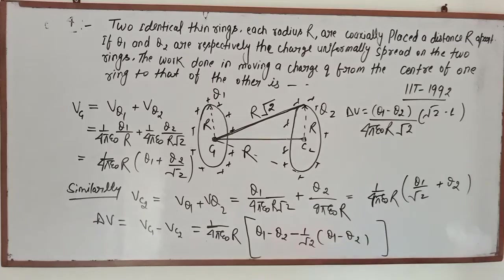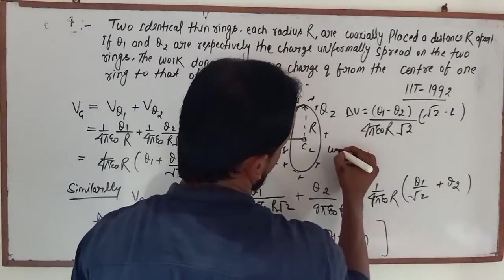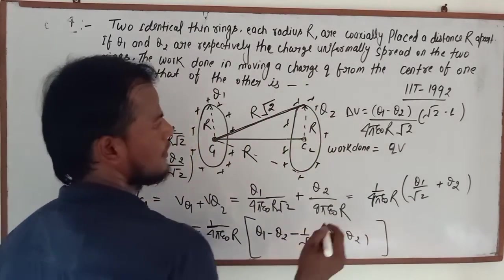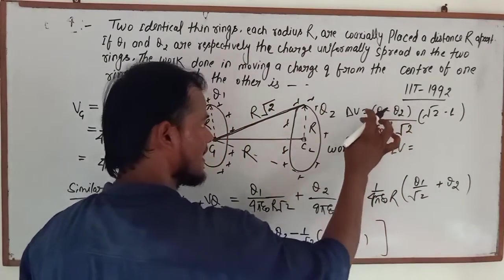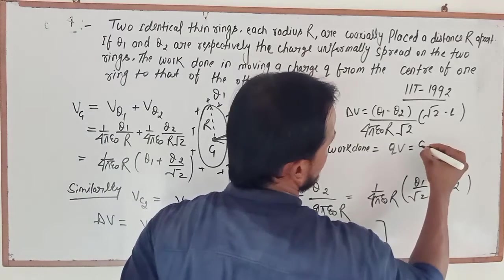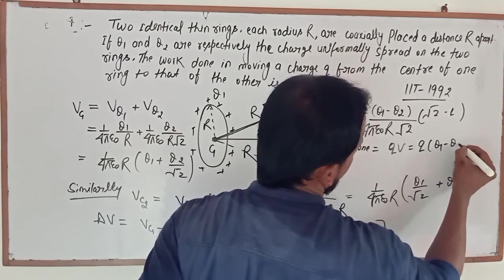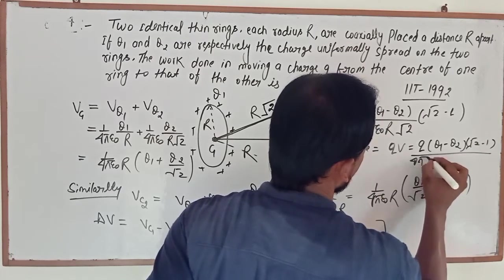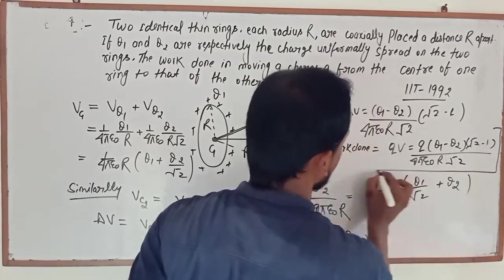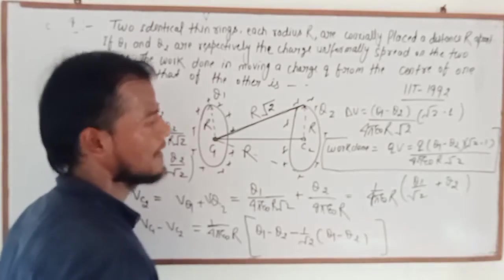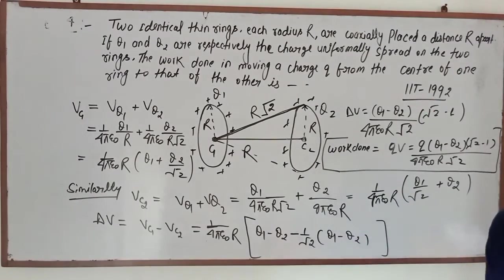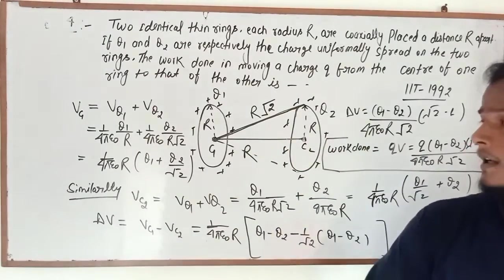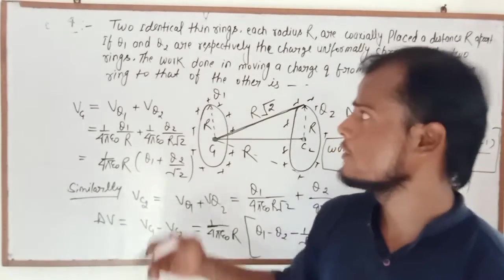Work done in carrying charge small q, work done equals q times V. So q multiplied by the potential difference, which is q into Q1 minus Q2 divided by 4 pi epsilon naught R root 2. This is the final work done, which is the IIT answer.